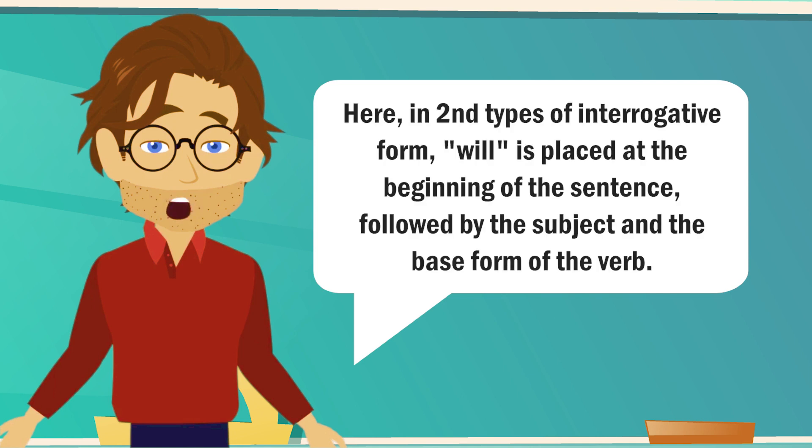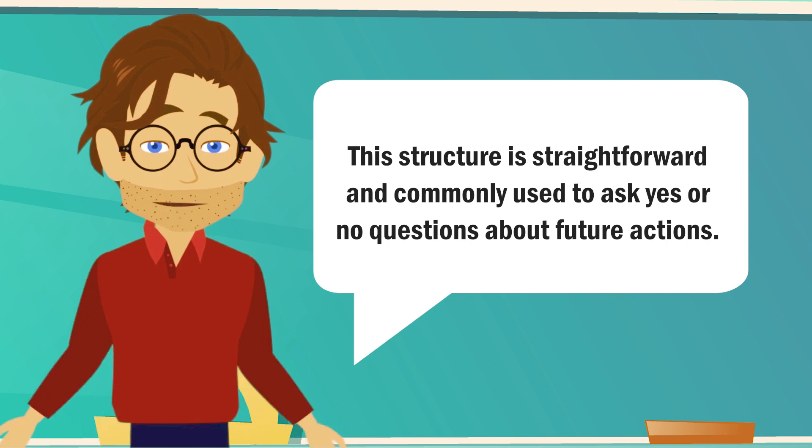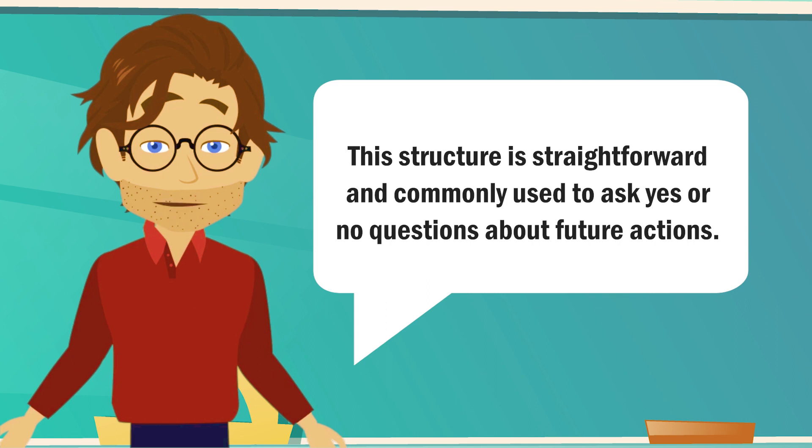Here, in second types of interrogative form, will is placed at the beginning of the sentence, followed by the subject and the base form of the verb. This structure is straightforward and commonly used to ask yes or no questions about future actions.